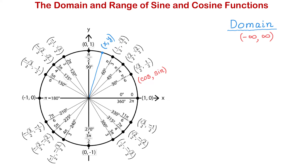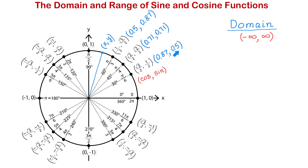Now let's talk about the range of these functions. The range is the set of all outputs of a function. Let's take a look at the values of the sine function to see how they change as the angle increases. I will write the coordinates of these points in decimal form — square root of 3 over 2 is approximately 0.87 and 1 half is 0.5. This will help us better visualize how the values of sine and cosine change.